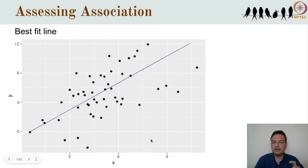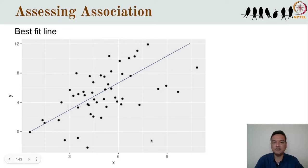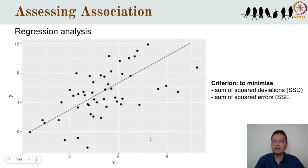We call this the deviation or error in the prediction. If the observed y is greater than predicted, we get a positive deviation; if less, a negative deviation. One possible criterion is to minimize the sum of all deviations, but positive deviations might cancel negative ones. So we apply the familiar solution of squaring all the deviations so all become positive, and their sum will always be zero or greater. Our task is to find the line that minimizes the sum of squared deviations, also called SSD or sum of squared errors (SSE).